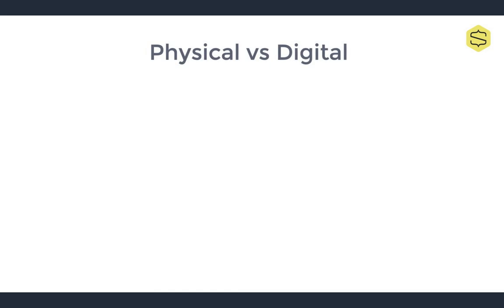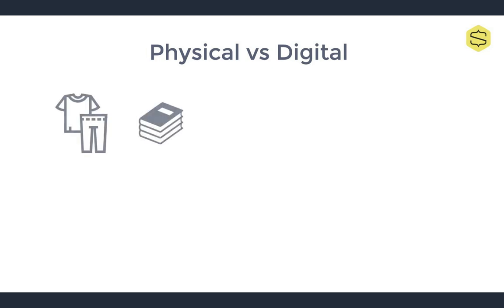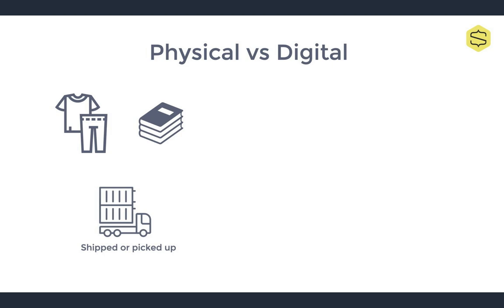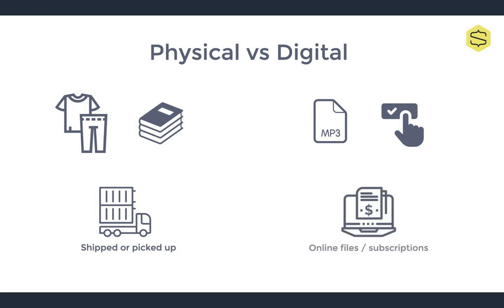There are two types of products that you can sell online: physical and digital. Physical products could be like clothes, books, or anything that needs to be shipped to or picked up by a client. Digital products, on the other hand, are things like subscriptions or files — think about Netflix subscriptions.